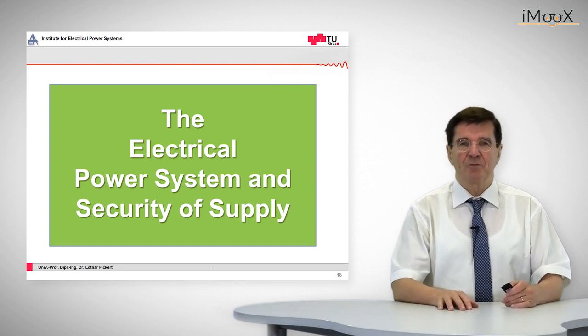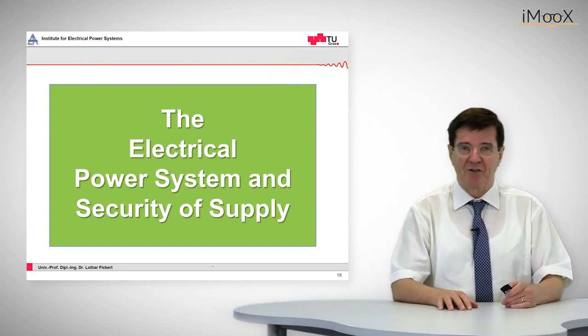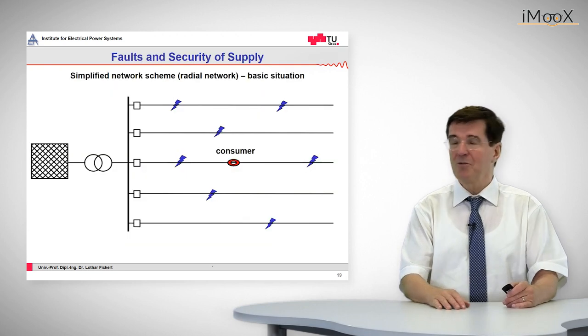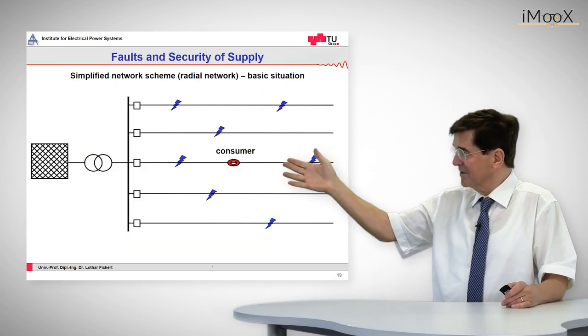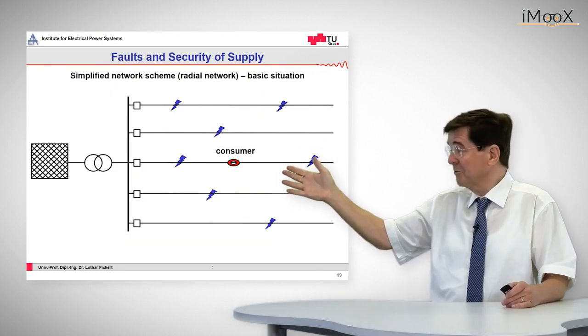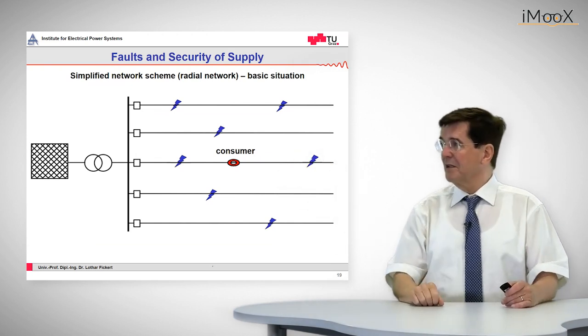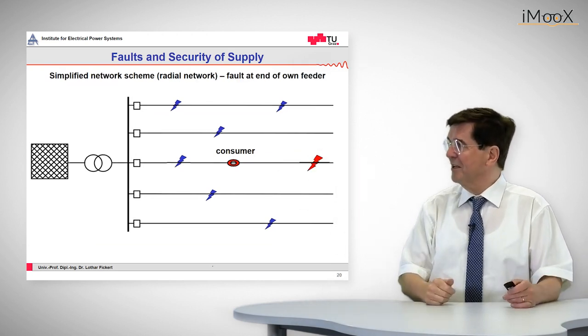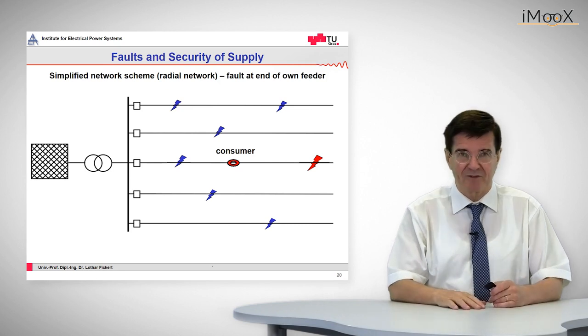Now let's see what happens and what is the influence of electrical faults on the security of supply. We see here an example, a simple example which serves as a very good model as a radial network. Let's look at what happens to the consumer if a fault occurs downstream from that consumer.